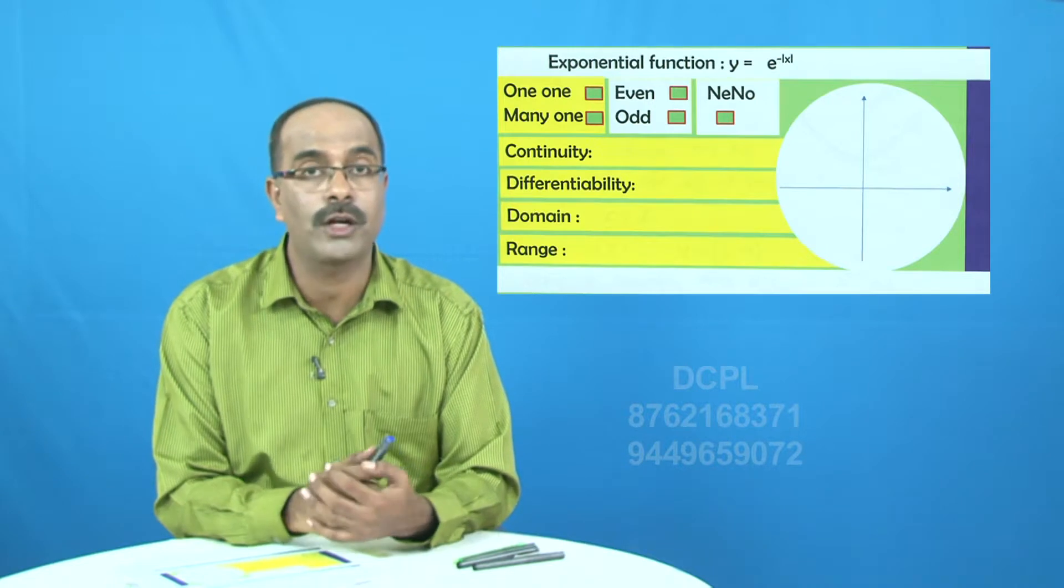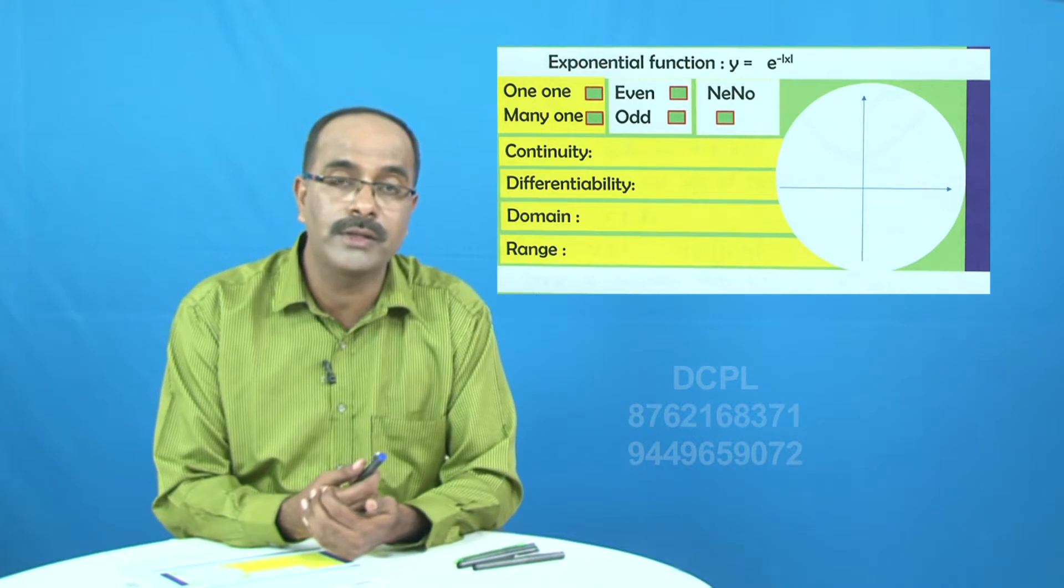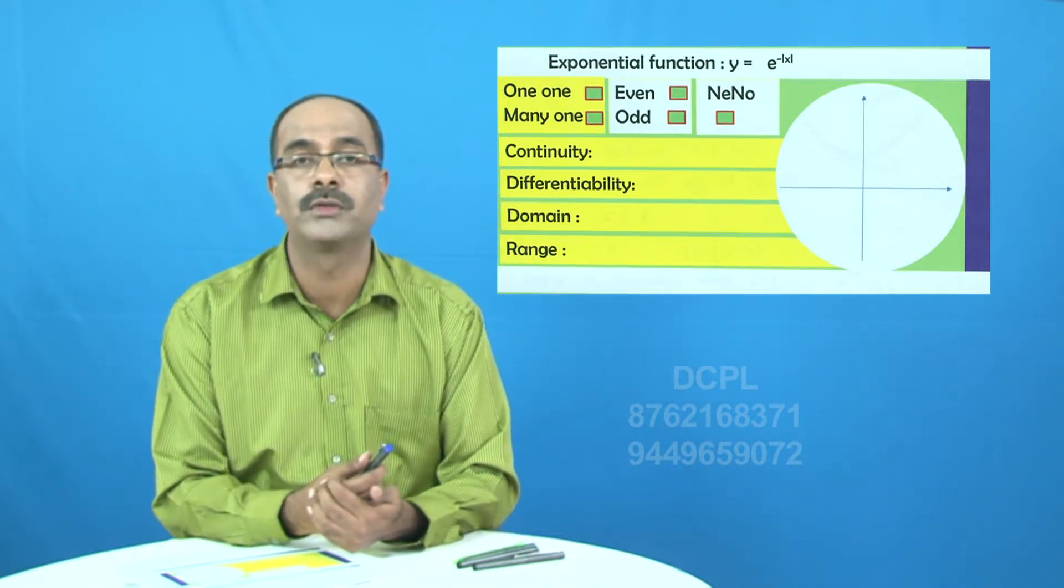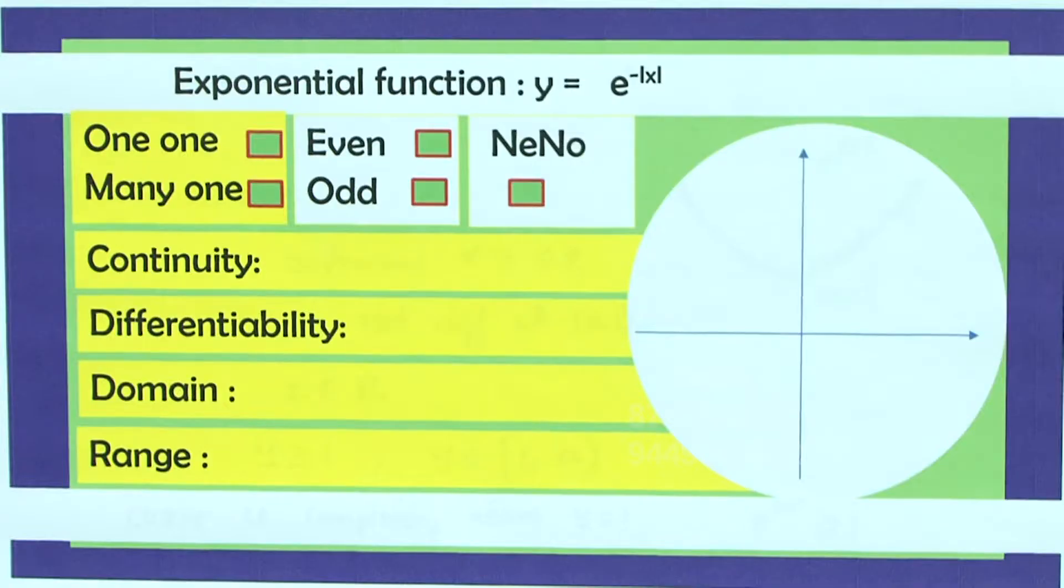Now let us talk about e power minus mod x. First draw e power minus x and use the basics of functions and draw the graph of e power minus mod x. So e power minus x is this.